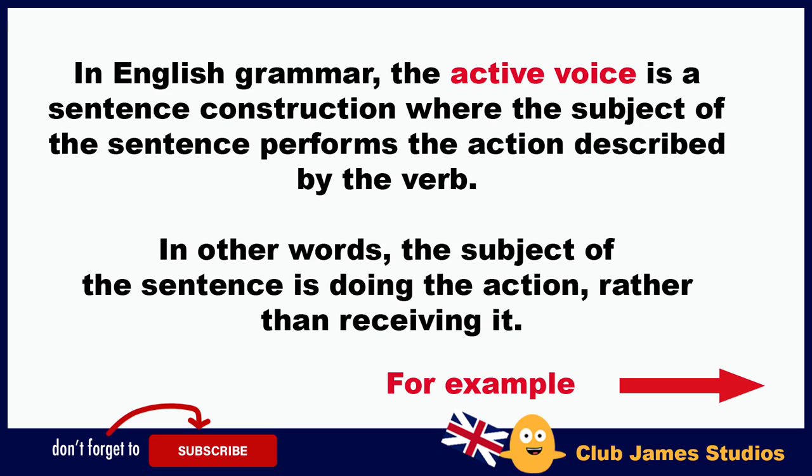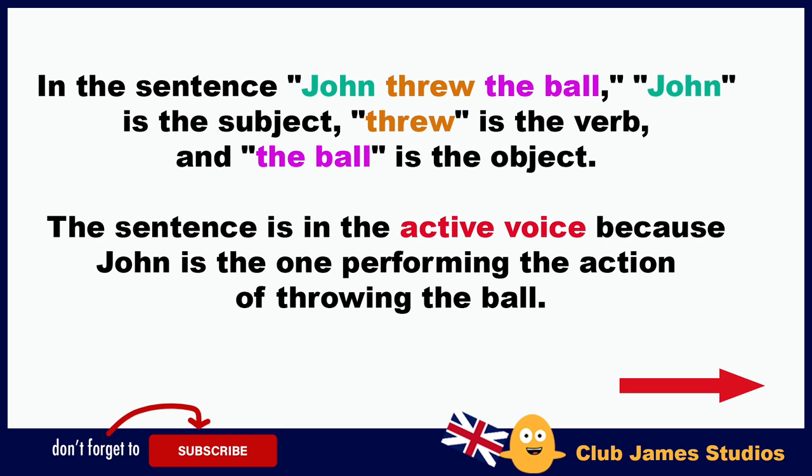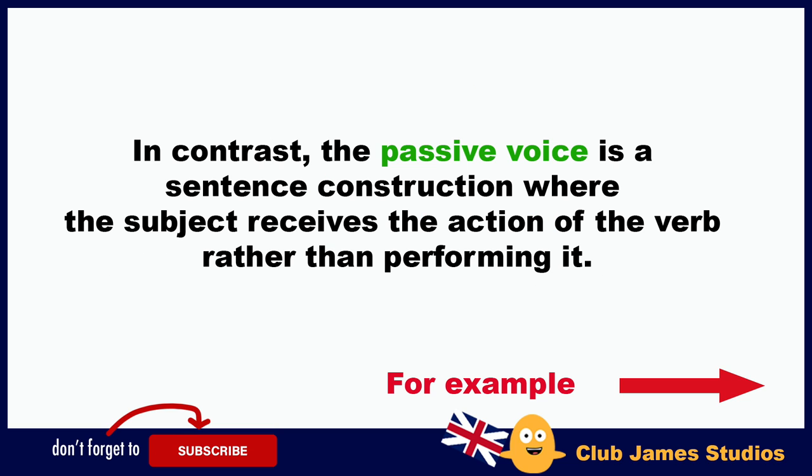In English grammar, the active voice is a sentence construction where the subject of the sentence performs the action described by the verb. In other words, the subject is doing the action rather than receiving it. For example, in the sentence 'John threw the ball,' John is the subject, threw is the verb, and the ball is the object. The sentence is in the active voice because John is the one performing the action of throwing the ball.